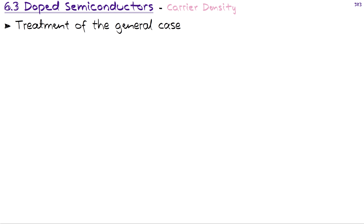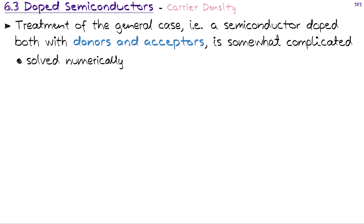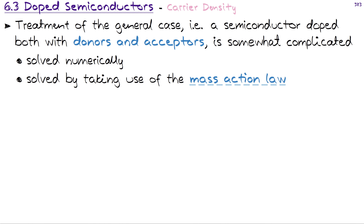Of course, the general case could be treated — a semiconductor doped with both donors and acceptors — but that case is more complicated. In practice, solving such a scenario would need to be done numerically. One approach is to use the mass action law, where the product n times p is a constant. Numerically the scenario could be solved, but for our purposes we are not interested in that most general case.